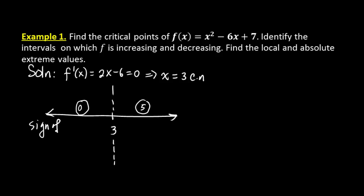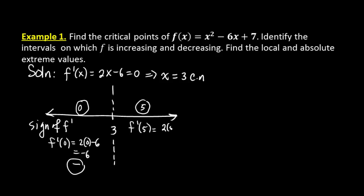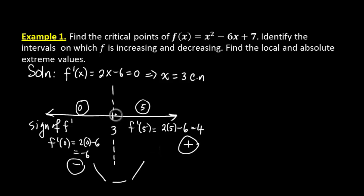We take the sign of our first derivative. f'(0) = 2(0) - 6 = -6, which is negative. And f'(5) = 2(5) - 6 = 4, which is positive. So we have a negative derivative, then zero, then a positive derivative — meaning the function is decreasing from negative infinity up to 3, and then increasing from 3 to positive infinity.